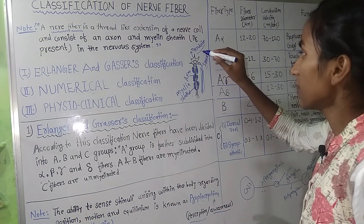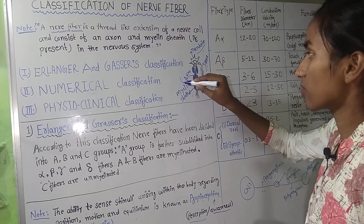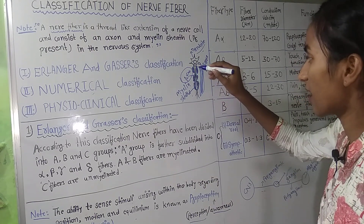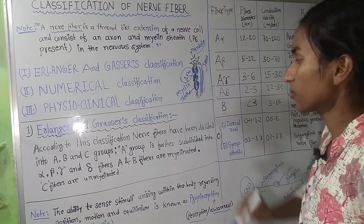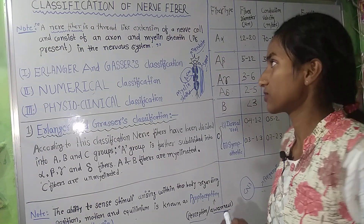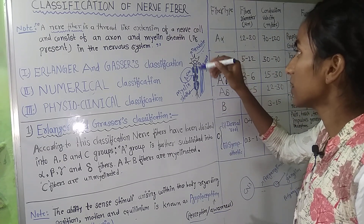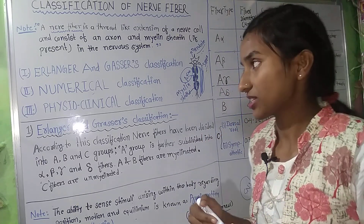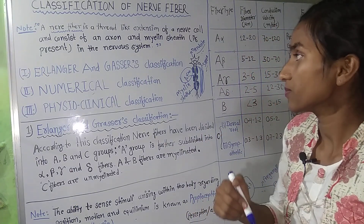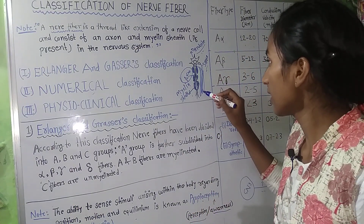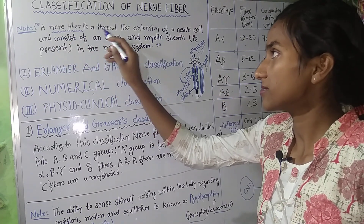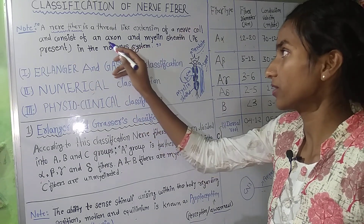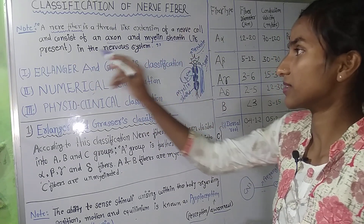In a typical neuron, there are dendrites, soma, and axon. The axon is a thread-like, branched structure. The axon is our nerve fiber. A nerve fiber is a thread-like extension of a nerve cell. It consists of an axon and a myelin sheath, if present.